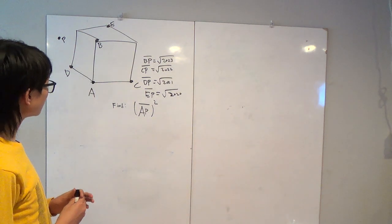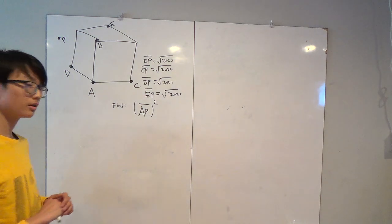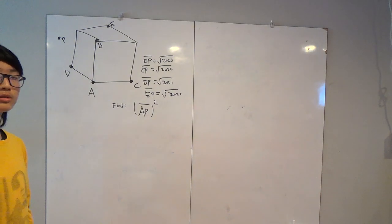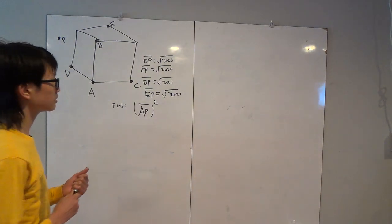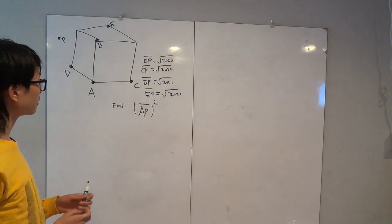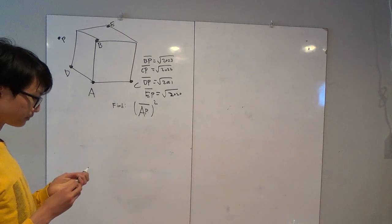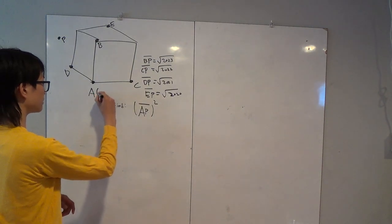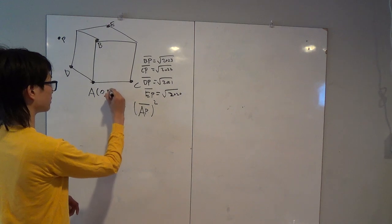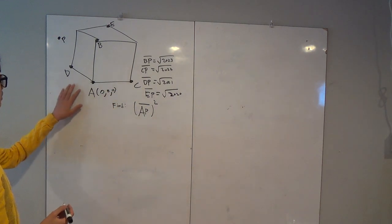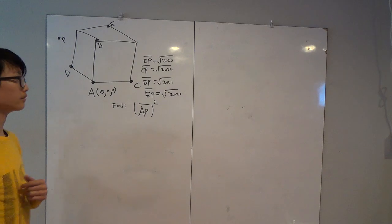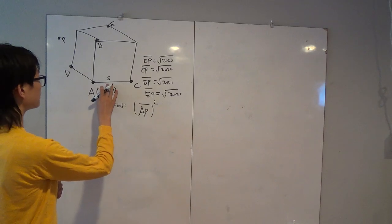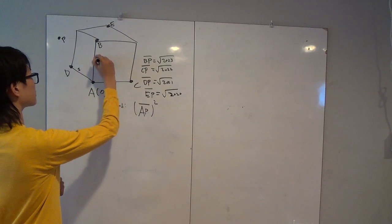So to start off, I'm going to give coordinate names to each one of these points, because the way we're going to solve this problem is by using the three-dimensional Pythagorean theorem along with coordinates to get the length AP. I'll start by making point A the origin of this space, so (0, 0, 0). I'll also give a name to the side length of the cube — I'll call it S. If one edge length is S, then the others are also S.